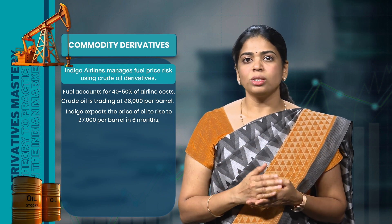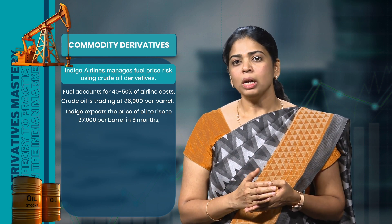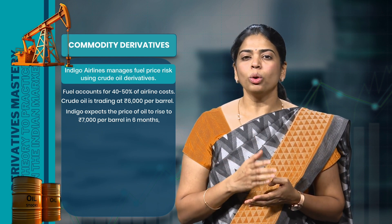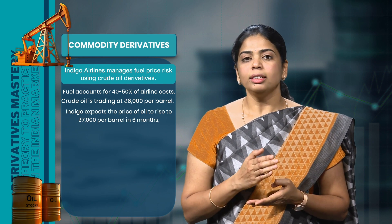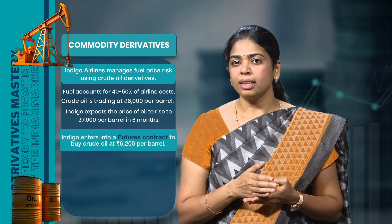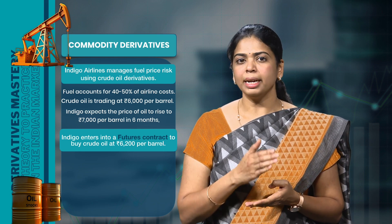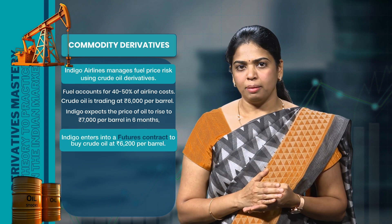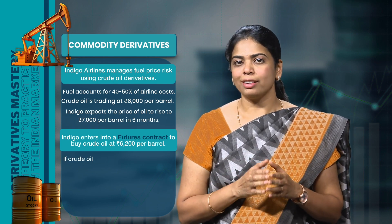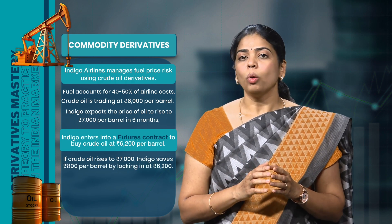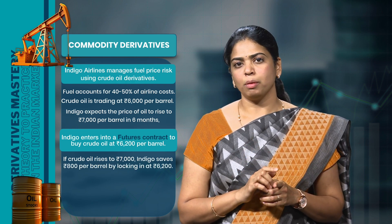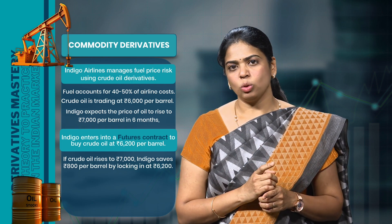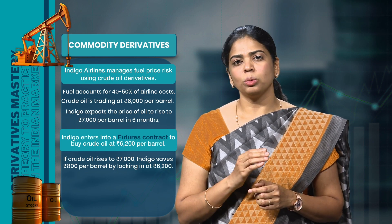If prices rise to Rs.7000 per barrel, their fuel costs will go up, which in turn would affect their profits. To avoid this risk, Indigo can use a crude oil derivative contract. They can enter into a contract with a trader today saying that irrespective of the market price of crude oil after 6 months, Indigo would buy it at a fixed price of Rs.6200 per barrel. Later, after 6 months, if crude oil rises to Rs.7000 per barrel, without the derivative contract Indigo would pay Rs.7000 per barrel. But since they locked in the price at Rs.6200, they saved Rs.800 per barrel through the derivative agreement.